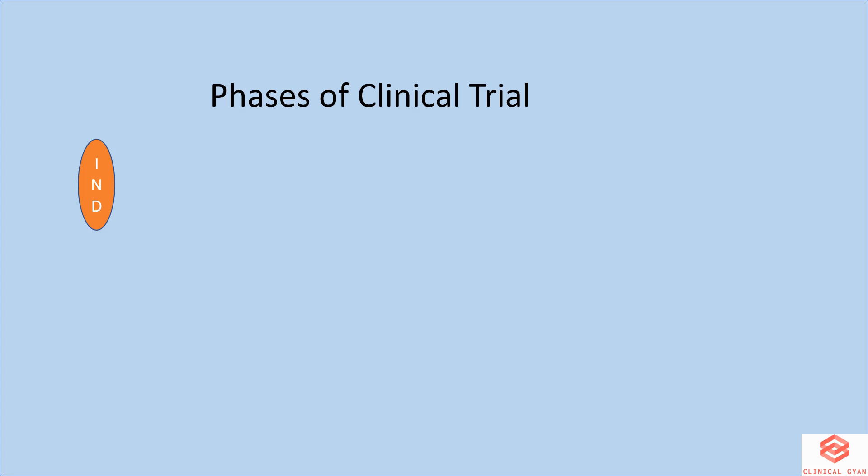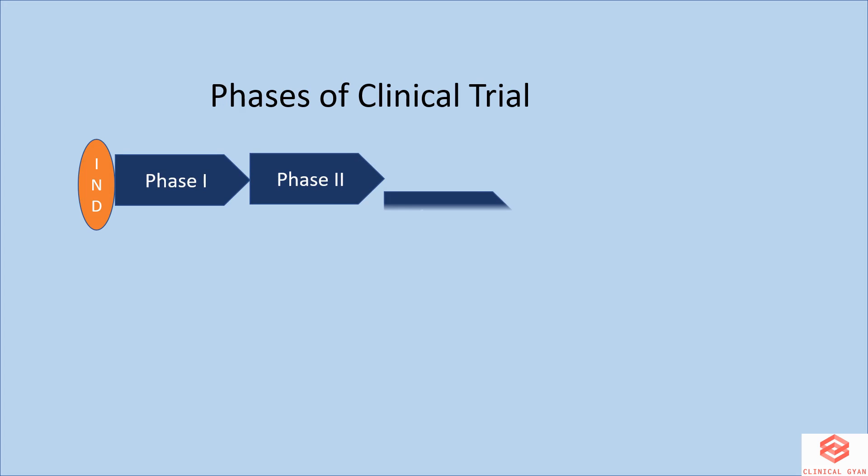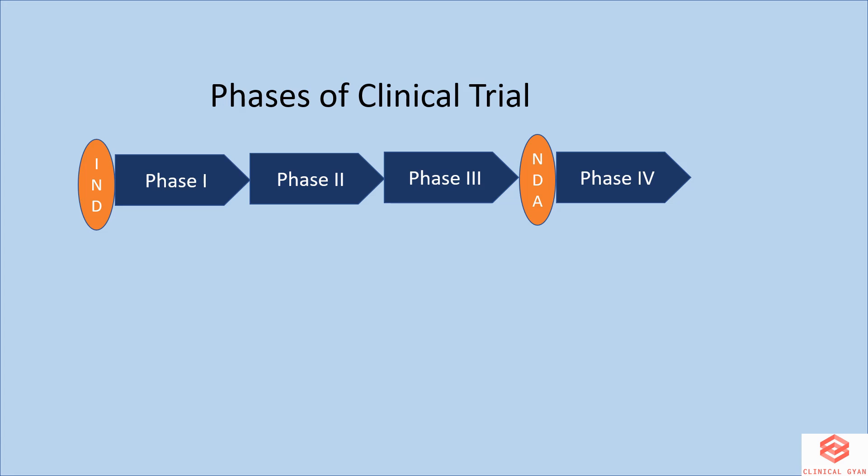Drug developers or sponsors must submit an IND, or Investigational New Drug Application, to health authorities such as the FDA or EMA before beginning clinical research. Trials can start once approval is granted. It proceeds through phase 1, 2, and 3. During a promising phase 3, drugs can be marketed through an NDA, or New Drug Application. Then it goes to phase 4.